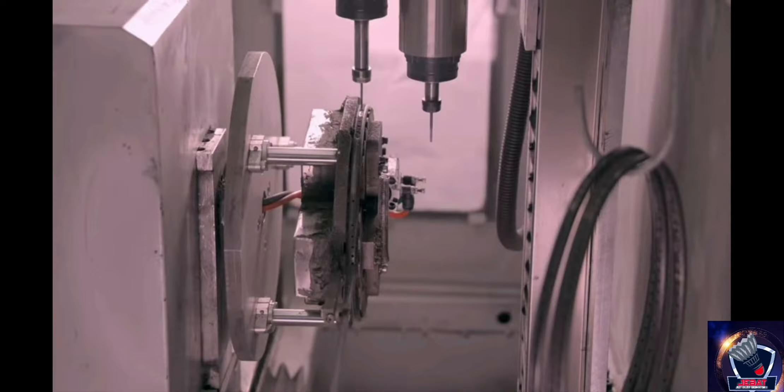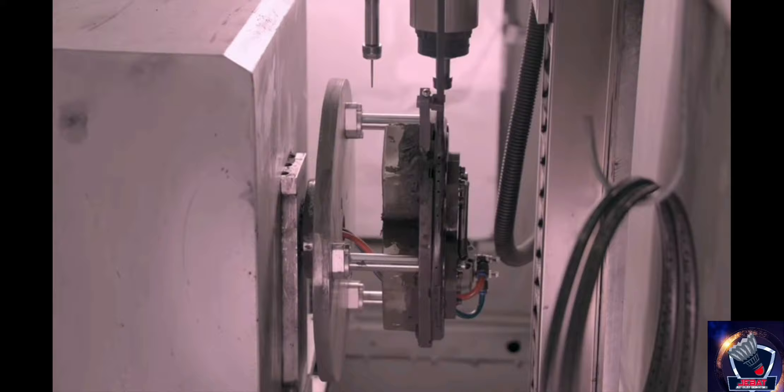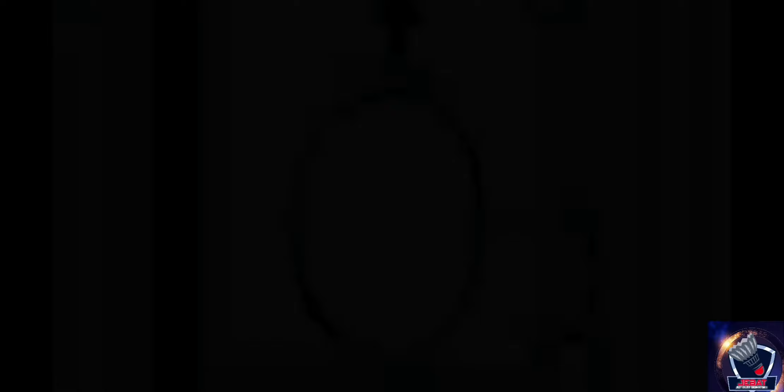A narrow bit drills the first sequence of holes in an offset pattern to make the racket easier to string. A larger gauge bit drills holes large enough to allow two strings to pass through.